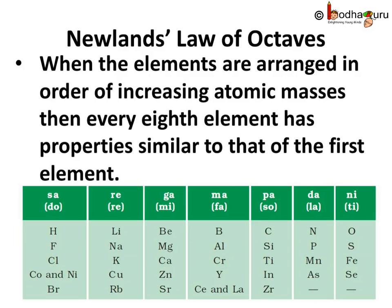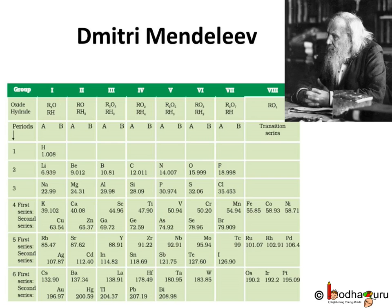Hello everyone. We already know about Newlands' Law of Octaves, which states that when the elements are arranged in order of increasing atomic masses, every 8th element has properties similar to that of the first element. We also saw that Newlands' Law of Octaves had many flaws, but it inspired many scientists to form a table that correlates the properties of elements with their atomic masses.